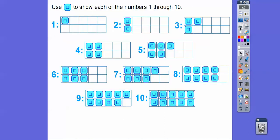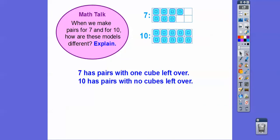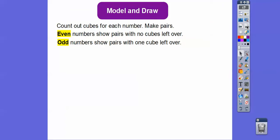Even numbers show pairs with no cubes left over — so 2, 4, 6, 8, and 10 are even numbers. Odd numbers are when they have a left-over block. So here's a left-over cube — 1 is odd. Here's a left-over, so 3 is an odd number. 5 is an odd number. 7 is odd, and so is 9. The ones that make left-over blocks are the odd numbers, and the ones that don't are even numbers.